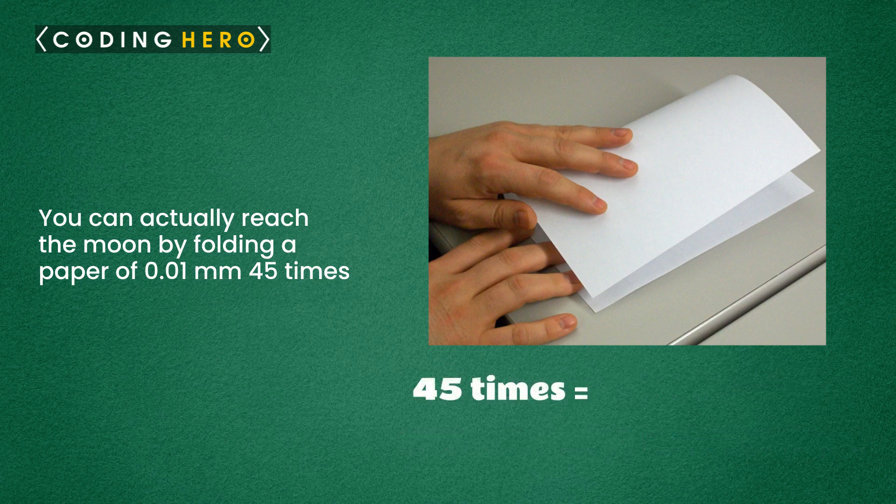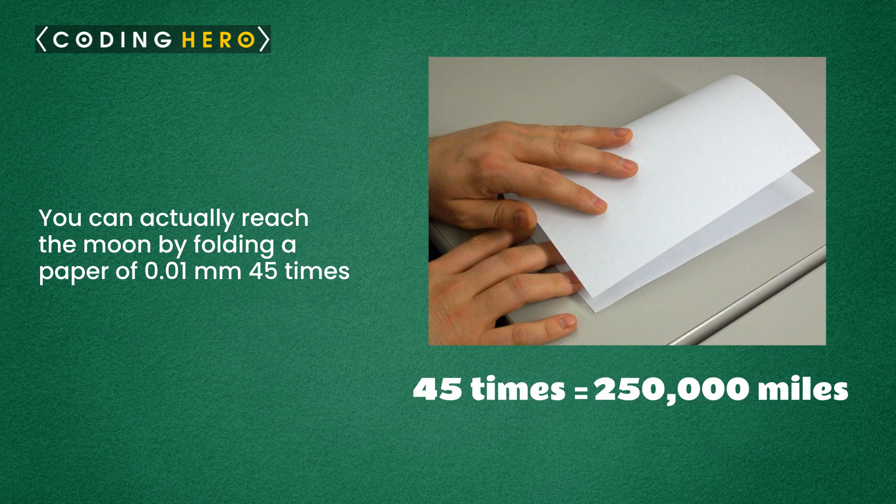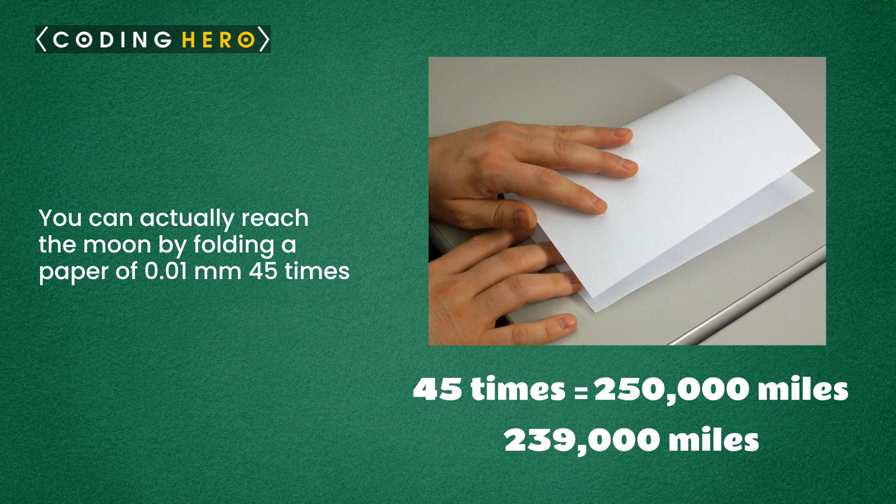At 45 times, the thickness is now over 250,000 miles and the distance between the earth and the moon is around 239,000 miles. So, we finally reach the moon. And if we fold it 46 times, we'll come back to earth.